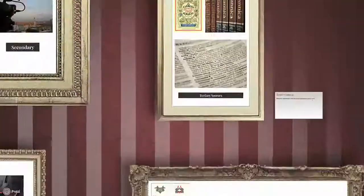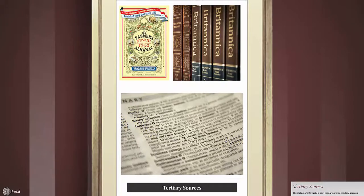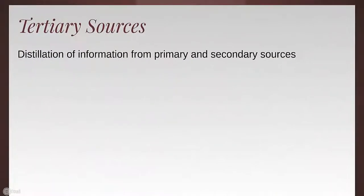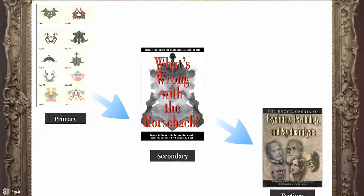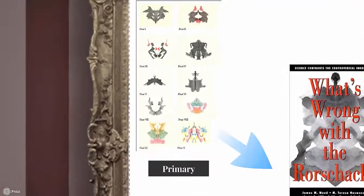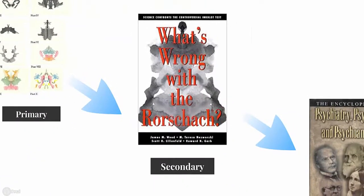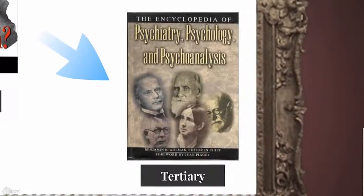Along with primary and secondary, there are also tertiary sources. These are things like encyclopedias, dictionaries, almanacs, and other reference works. They distill primary and secondary sources into a concise form of information about a topic. So, the Rorschach test in psychology would be a primary source, while a book discussing the test is a secondary source, and an entry in an encyclopedia is a tertiary source.